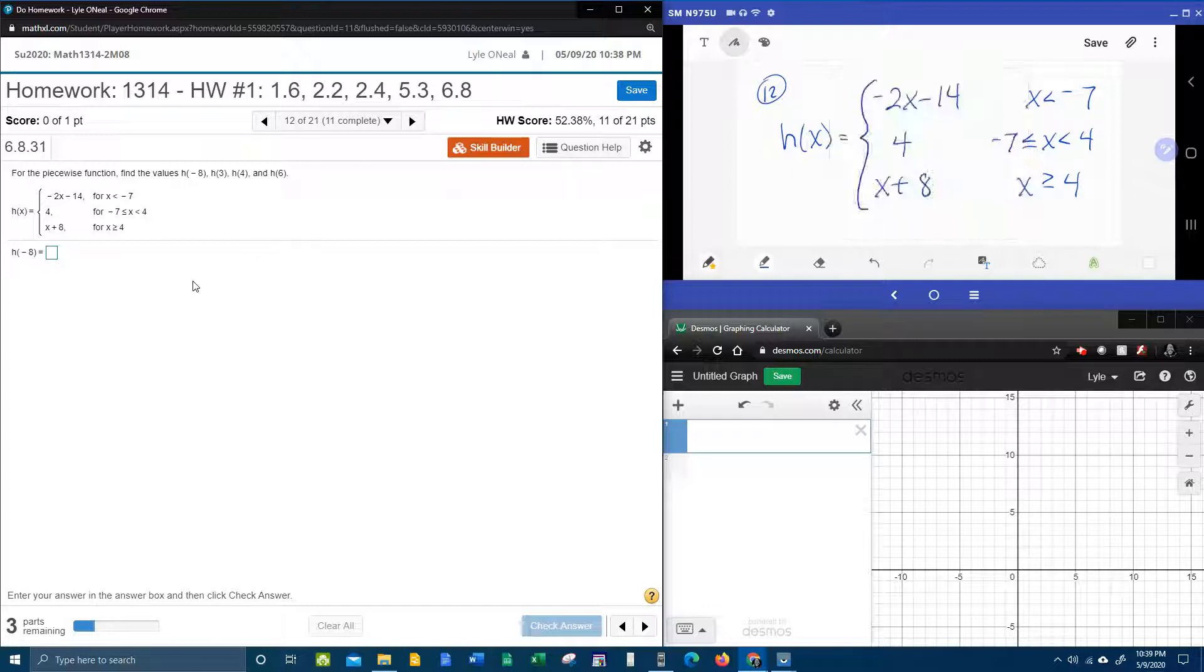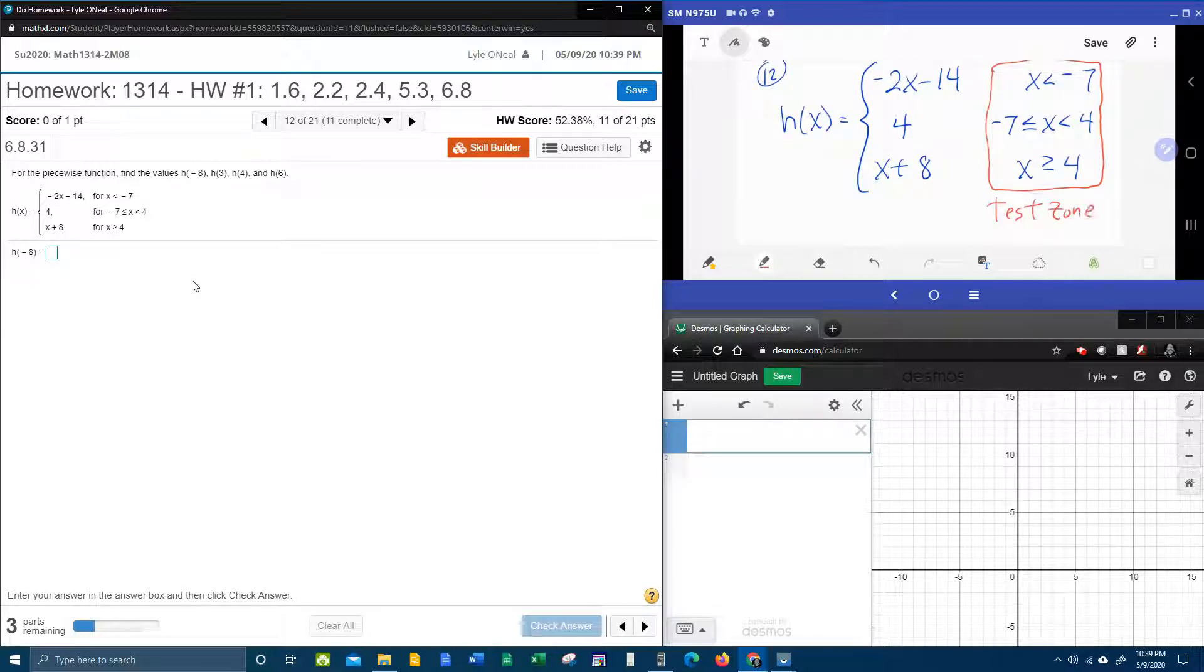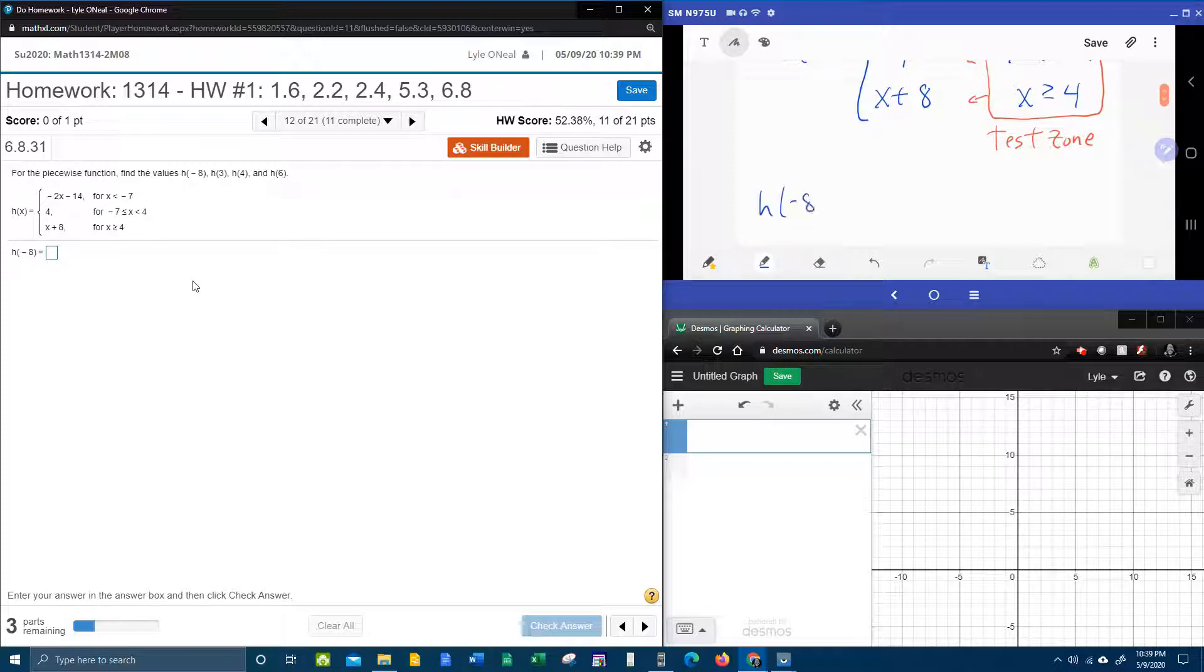So the first thing that I want to point out here, in the previous video I said that this information back here at the back, this is the condition. I also call this the test zone, because for each function value that you want to find, you have to take the x they give you and test it to see where to put it. So we've got one, two, three pieces that we could possibly plug into, and the first function value that they want us to find is h of negative eight. So check this out. Negative eight is an x value.